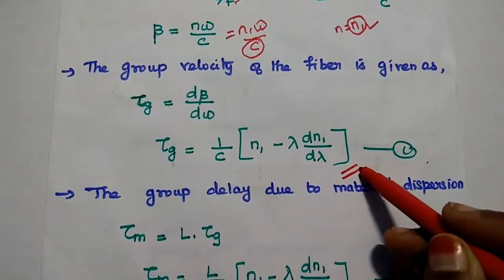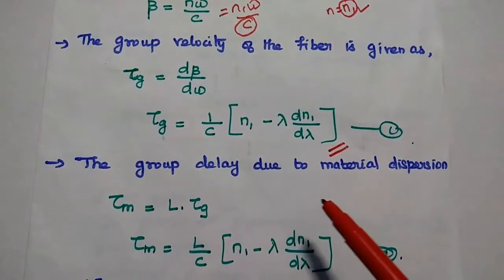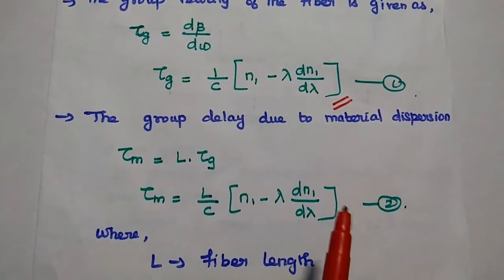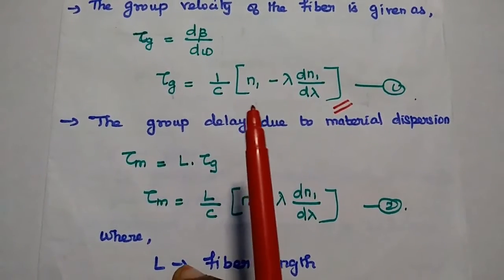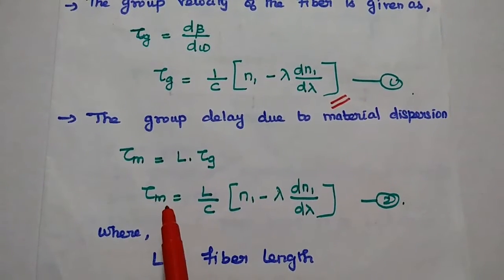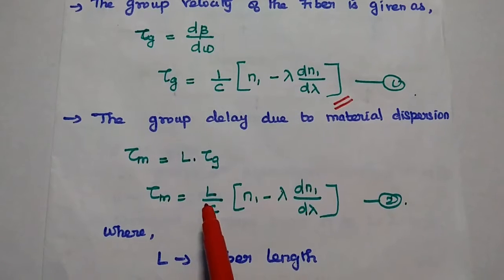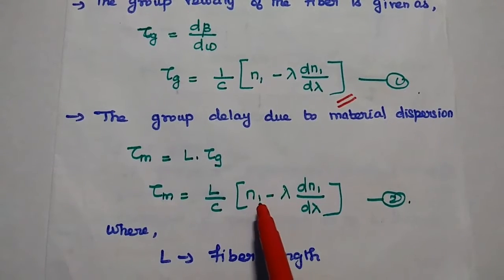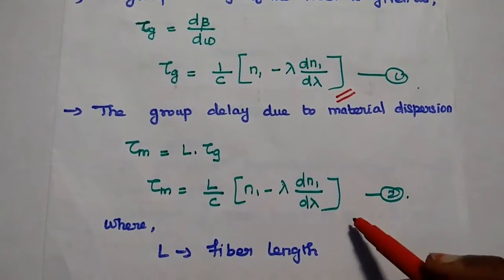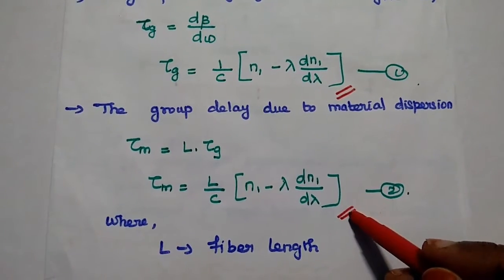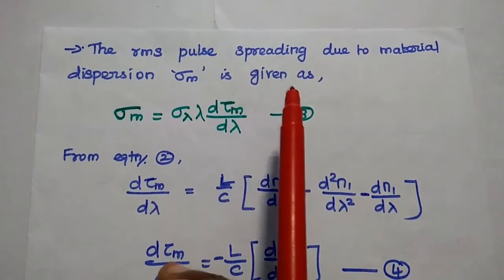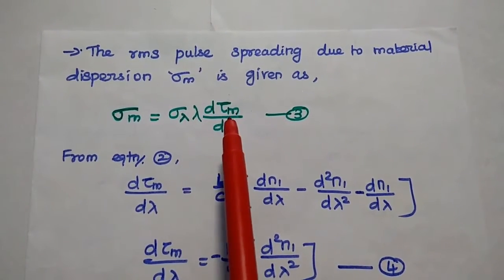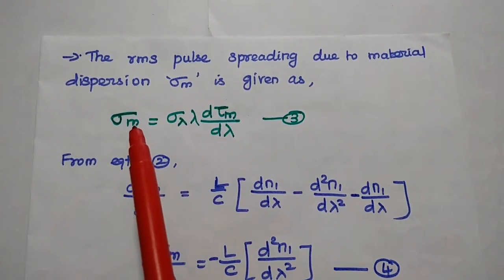Next, we are going to find the group delay due to material dispersion. This group delay can be obtained by multiplying the fiber length with the group velocity. So τm, the group delay due to material dispersion, equals L times τg, which gives (L/c) times (n1 minus λ·dn1/dλ). Consider this as the second equation. This is a very important one. The RMS pulse spreading due to material dispersion can be obtained using spectral wavelength σλ and group delay, denoted as σm.